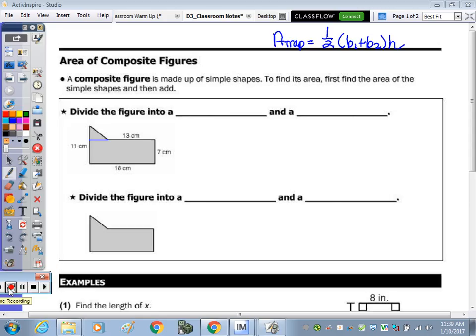In today's notes we're going to take a look at the area of composite figures. A composite figure is made up of just simple shapes. That means 2D shapes, but could also be a half circle or quarter circle. To find the area we just divide it up into our simple shapes and add.